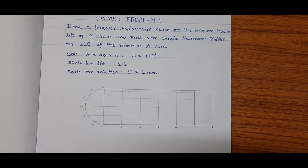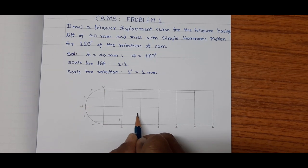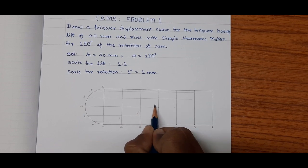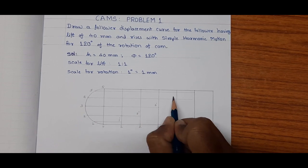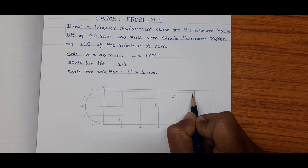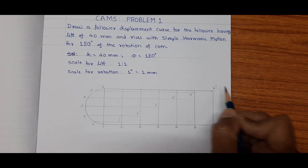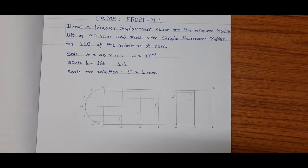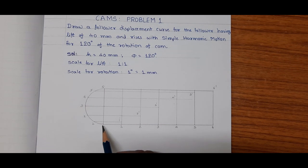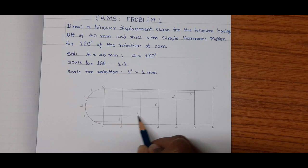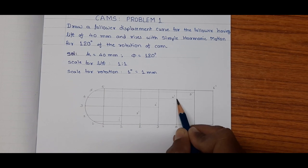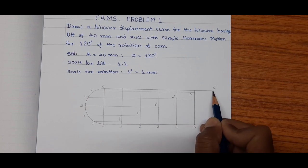Mark these intersection points as 1 dash, 2 dash, 3 dash, 4 dash, 5 dash, and 6 dash. Now join all these points by a smooth curve: 0, 1 dash, 2 dash, 3 dash, 4 dash, 5 dash, and 6 dash.